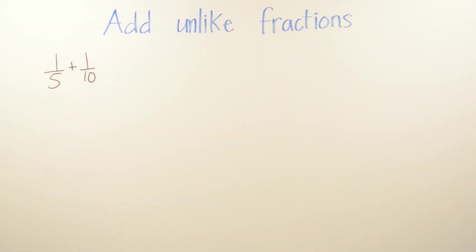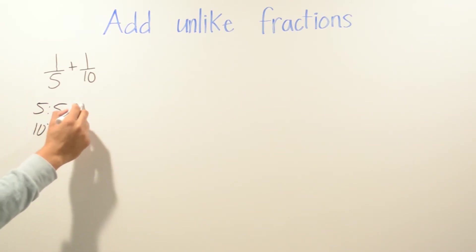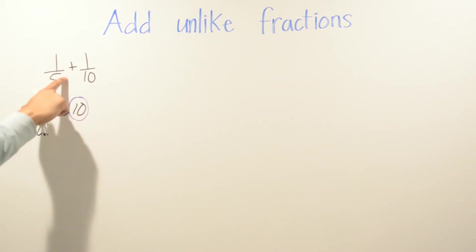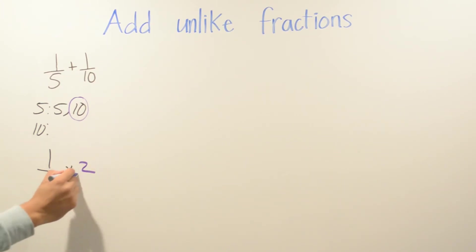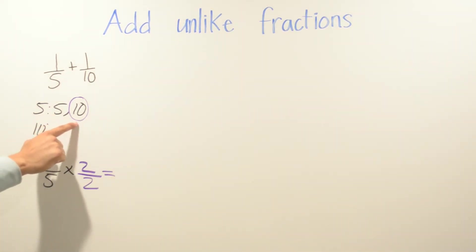In this example we have one-fifth plus one-tenth. We cannot add these fractions because they don't have a common denominator. So we find the least common multiple for 5 and 10. I stop right away because 10 is already in our second fraction. I count how many times we multiply 5 to get to 10 — one, two — so I multiply by 2. Whatever I do on the top I always have to do on the bottom.